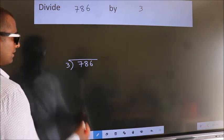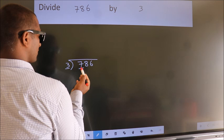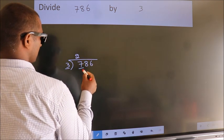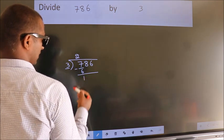Next, here we have 7. Here 3. A number close to 7 in the 3 table is 3 times 2 is 6. Now we should subtract. We get 1.